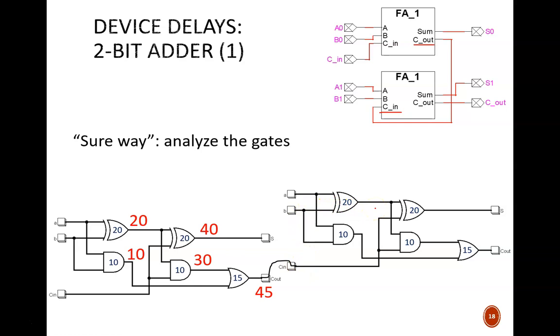This top XOR gate has a starting delay of zero, and we add 20 through the gate for a total of 20 nanoseconds. Note the assumption here that all inputs to the adder from A0 through B1 arrive at the same starting time. Similarly, this OR gate has a delay of 10 nanoseconds.